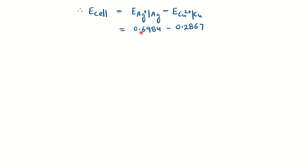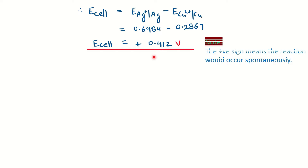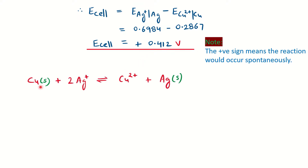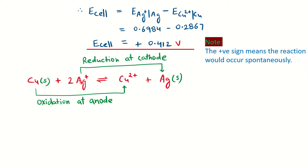The cell potential E(cell) = E(cathode) − E(anode). Substituting the calculated values gives E(cell) = +0.412 V. A positive value indicates the reaction occurs spontaneously; a negative value would indicate a non-spontaneous reaction. For the complete cell reaction: oxidation occurs at the anode (Cu → Cu²⁺ + 2e⁻) and reduction occurs at the cathode (2Ag⁺ + 2e⁻ → 2Ag).